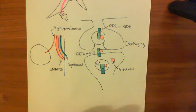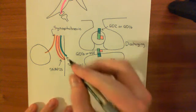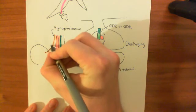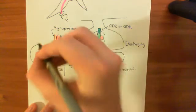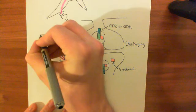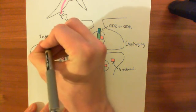Now, tetanus neurotoxin is going to come in here, and it's going to cut synaptobrevin. So it's going to cut here. Tetanus neurotoxin cuts here.